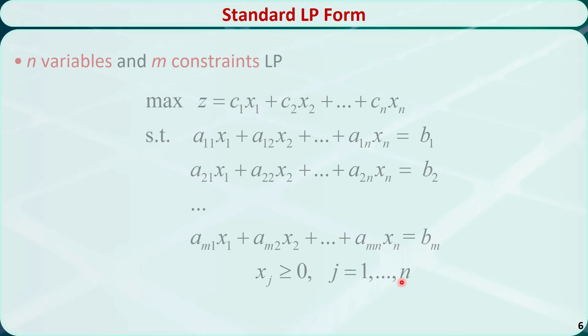After we introduce slack variables or excess variables, a linear programming problem can be written in this standard form. There are a total of n variables and m constraints. The objective function z is equal to the sum of each coefficient cj times the variable xj, where j is from 1 to n.